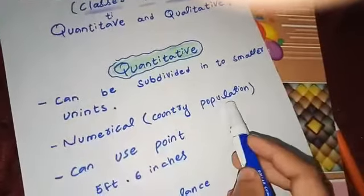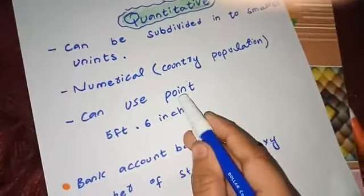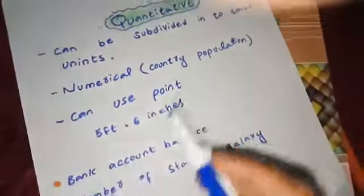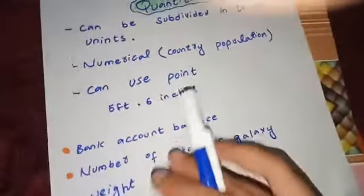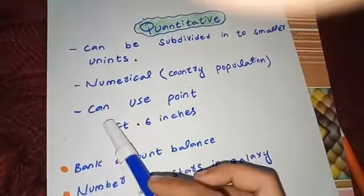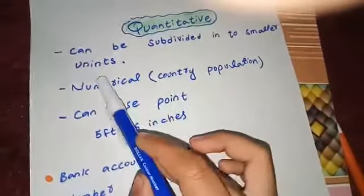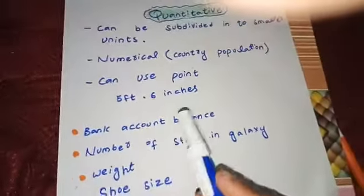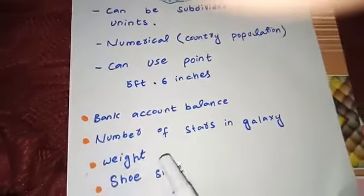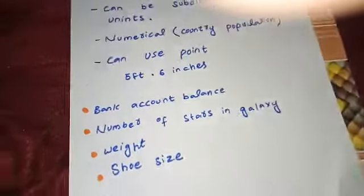A key difference is that you can use decimal points in quantitative variables, like five foot point six inches. They are always in numeric form and can be subdivided into smaller units. Some examples of quantitative variables are bank account balance, number of stars in a galaxy, your weight, and your shoe size.